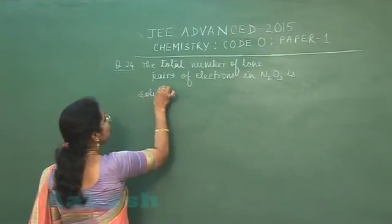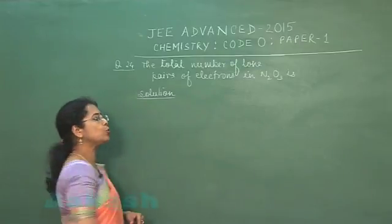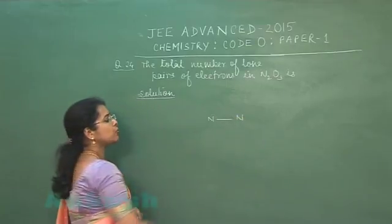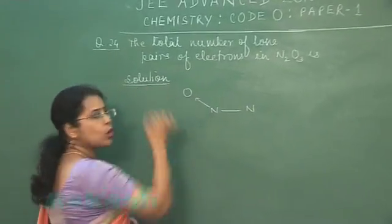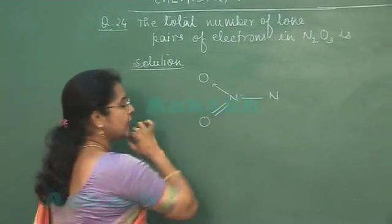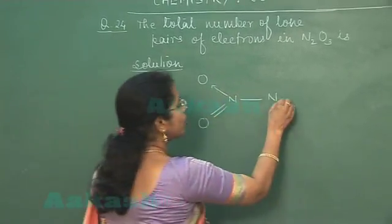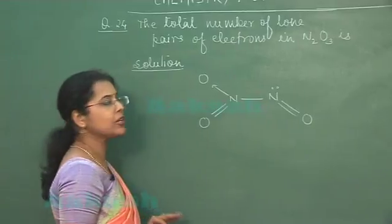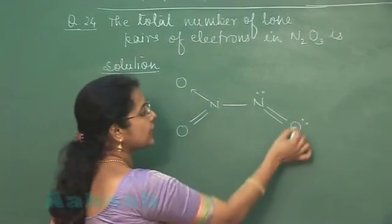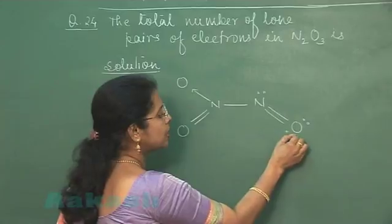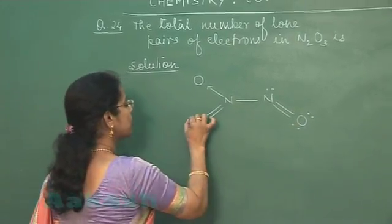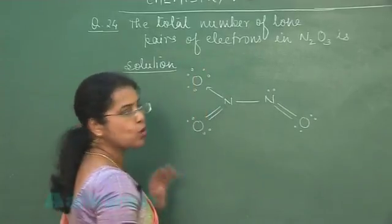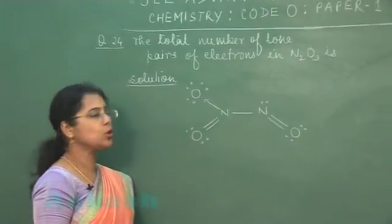Let us draw the structure of N2O3 to find the number of lone pair electrons. In N2O3, nitrogen is directly bonded to nitrogen. One oxygen forms a coordinate bond, another oxygen forms a double bond. The double-bond oxygen and the nitrogen atom each have a lone pair. The oxygen participating in the multiple bond has two lone pairs, another nitrogen has two lone pairs, and the oxygen with the coordinate bond has three lone pairs.